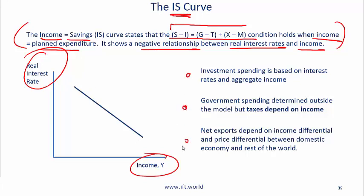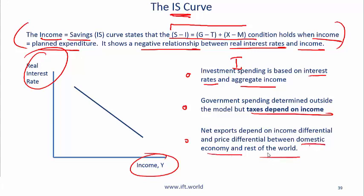Key points used in the derivation of the IS curve: Investment spending is based on interest rates and aggregate income — low interest rates mean high investment, and high aggregate income also means high investment. Government spending is determined outside the model, but taxes depend on income. Net exports depend on income differential and price differential between the domestic economy and the rest of the world.